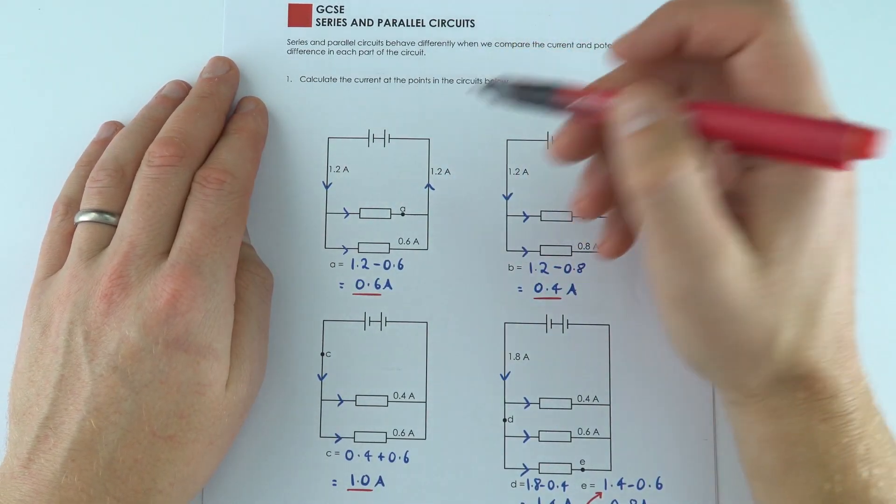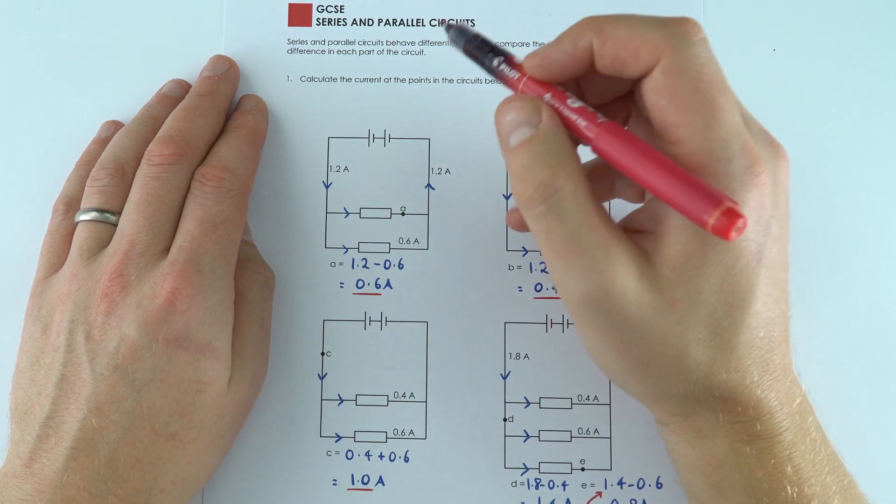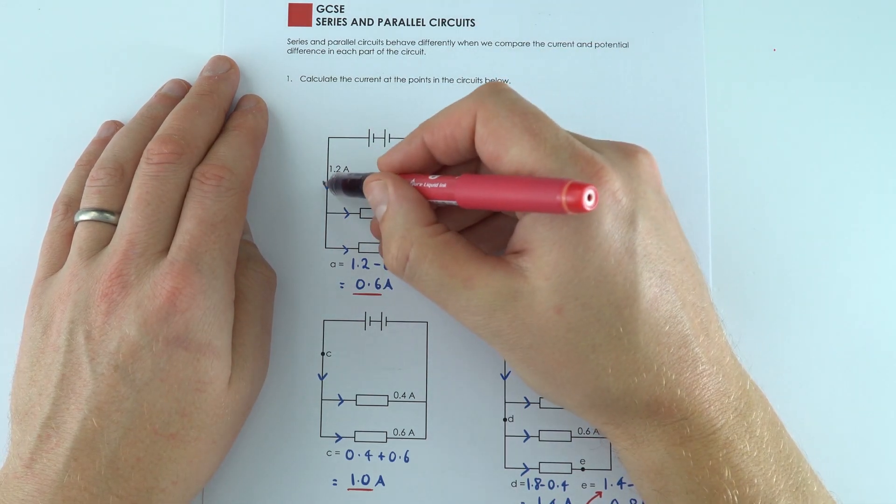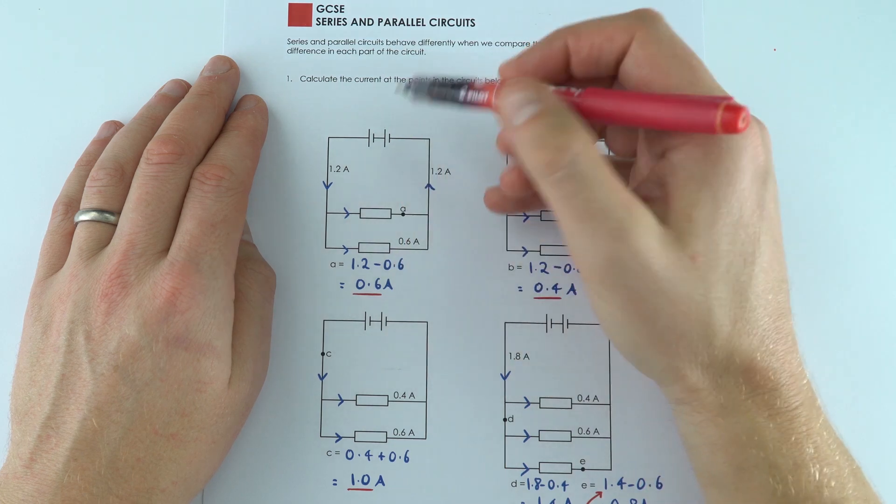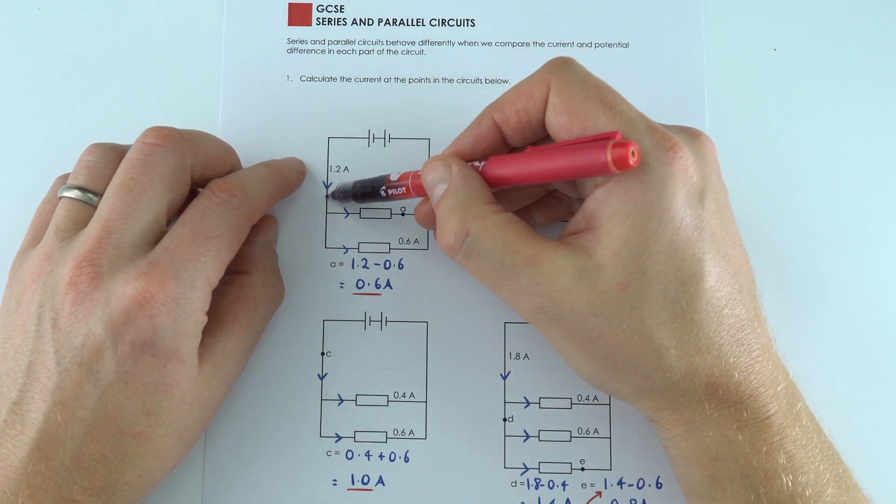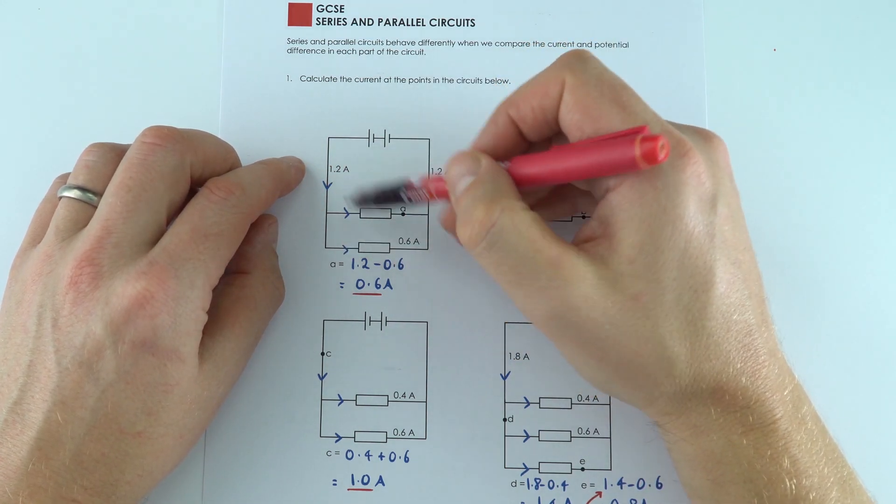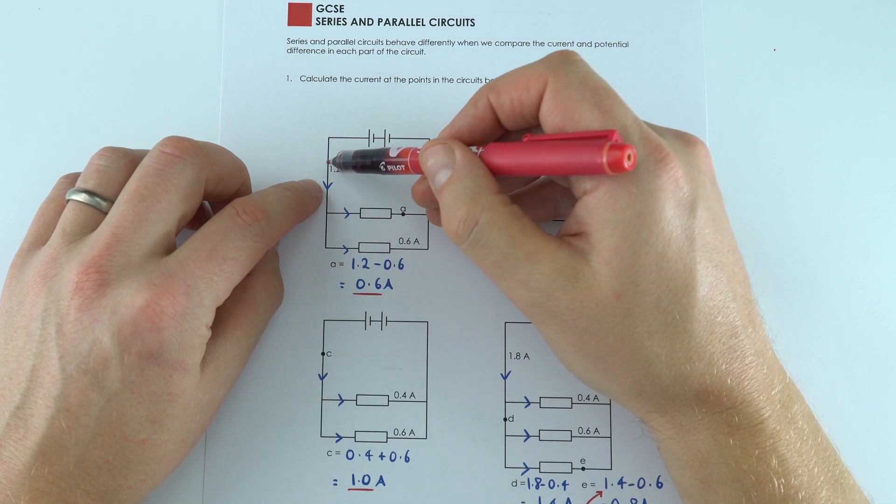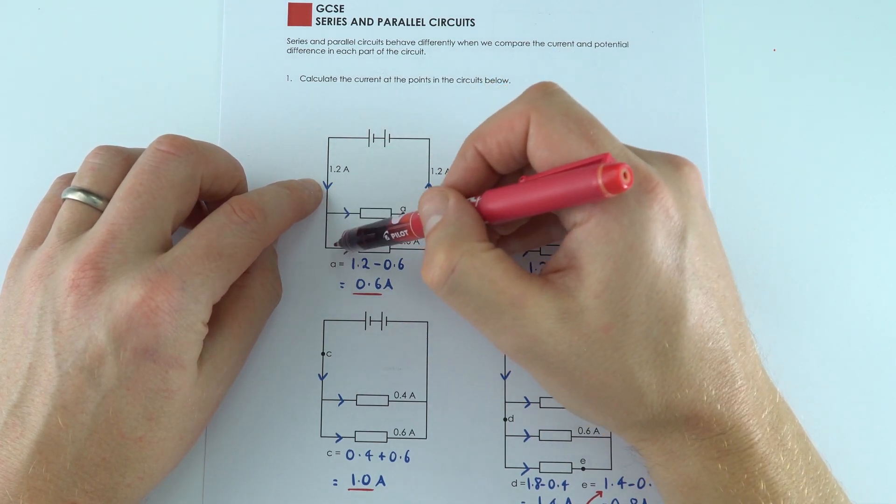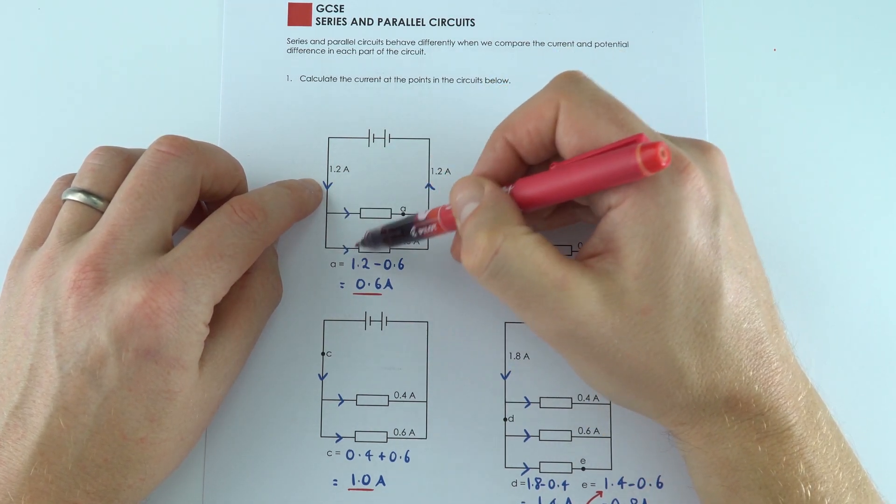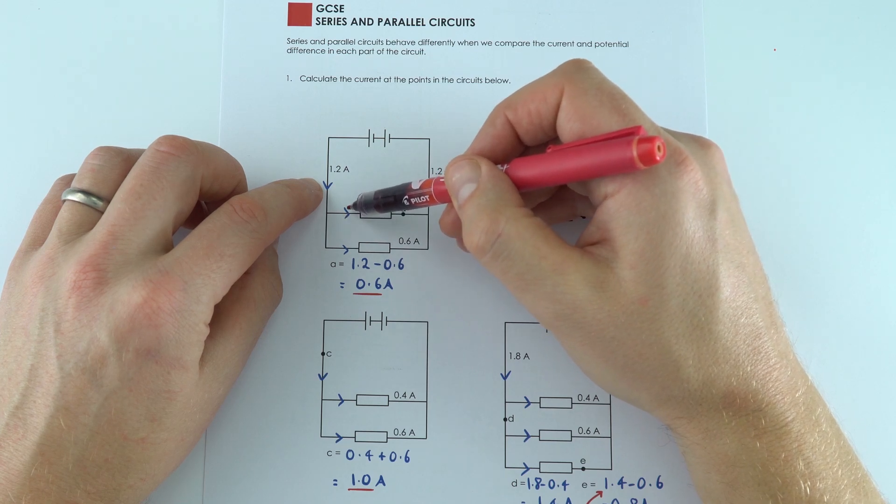For question one we're looking at the current in different places, and you've got to remember that in a parallel circuit the current will split at a junction. So if you've got 1.2 amps going down here, and I put some arrows on to help me work out what's going on, if you've got 1.2 amps here and we know that there's 0.6 amps over here, then that means 0.6 amps must go that way.